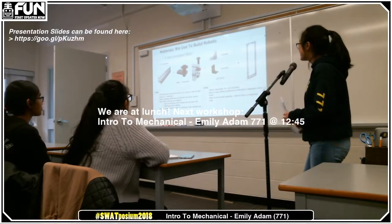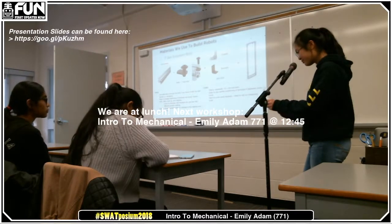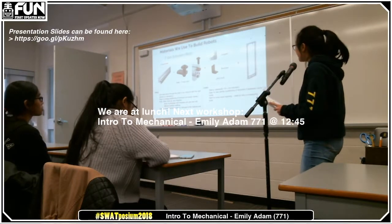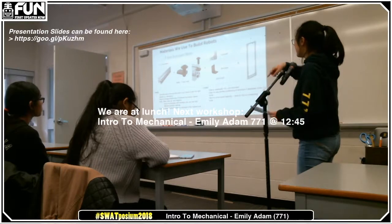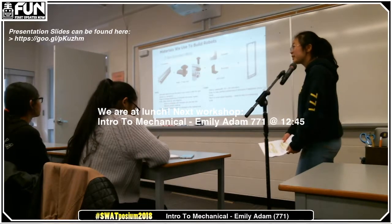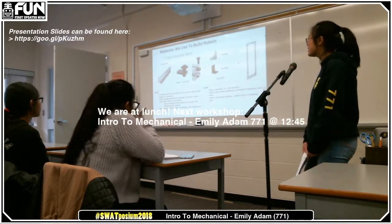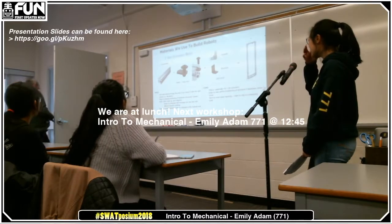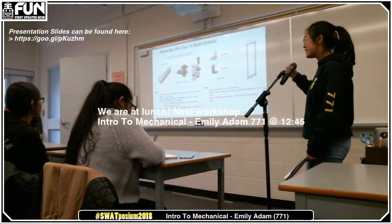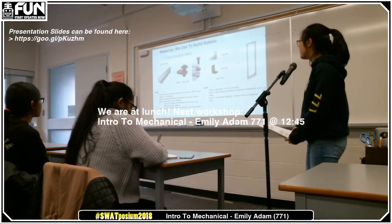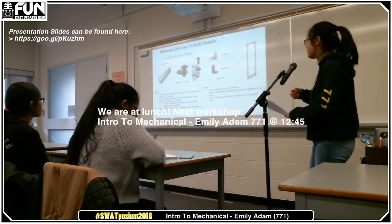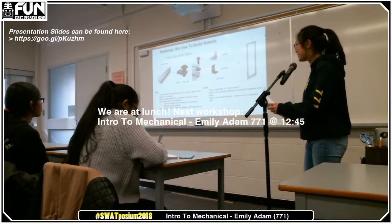Another commonly seen material is T-slot extrusion slash 80-20. It's strong but heavier. You'll notice there are slots along the sides, and you can slide items through those slots if you mount them with the right pieces. In 2018, several elevators are made out of this material because you can slide items through those slots. However, you can also fasten things into position using that method, but if your fastener comes loose, it will fall out of position.